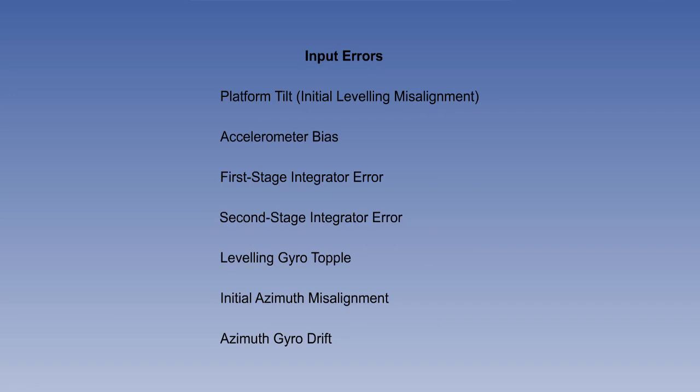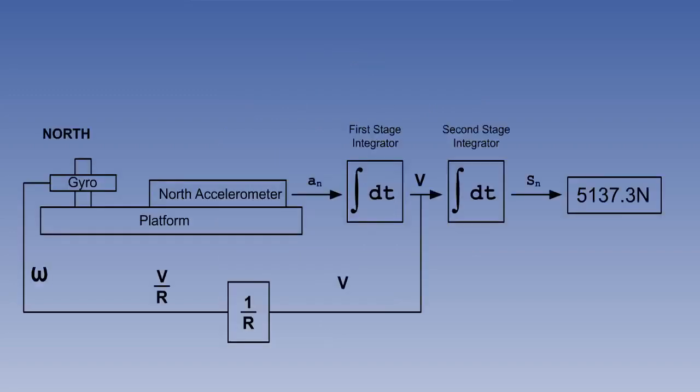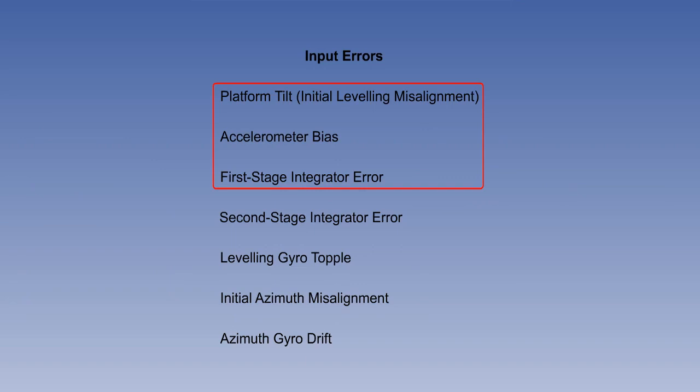Let's now see which of our errors will give a Schuller pattern. First, we'll remind ourselves of the full list. Then we'll look at the feedback loop to see what caused the platform tilt oscillation error. The problem was caused by a feedback of false velocity through the V over R loop. So if any of the input errors gives us a false velocity, we will get a Schuller oscillation. Let's look at what could cause a velocity error. As we have seen, the platform might not be level. Secondly, there might be an accelerometer bias. And finally, there might be first stage integrator error. These are the only three.